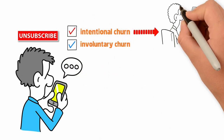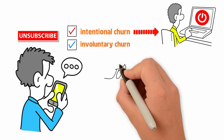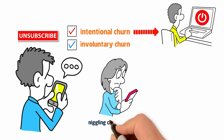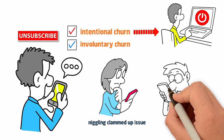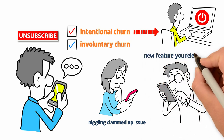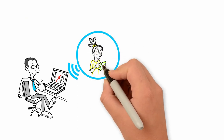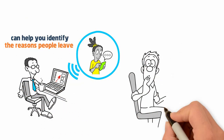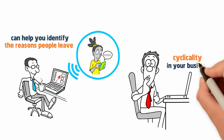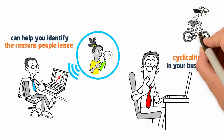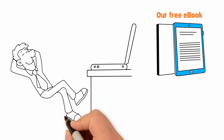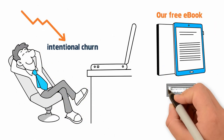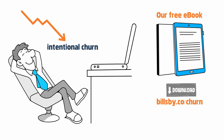Intentional churn is when customers choose to leave. Maybe they were frustrated by a niggling, clammed-up issue, have moved to a competitor, or that new feature you released just didn't work for them. Surveying your customers when they cancel can help you identify the reasons people leave. Maybe you'll notice something interesting, like cyclicality in your business — for example, a bike rental service might see drop-off in the winter. Our free e-book has 20 ways you can reduce intentional churn. You can download it at billsby.co/churn.